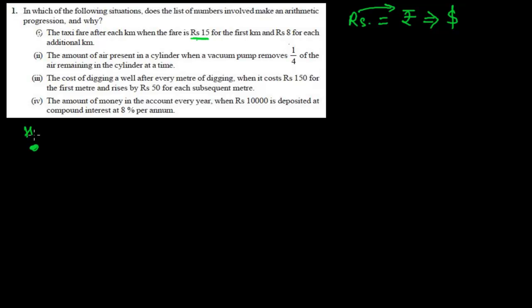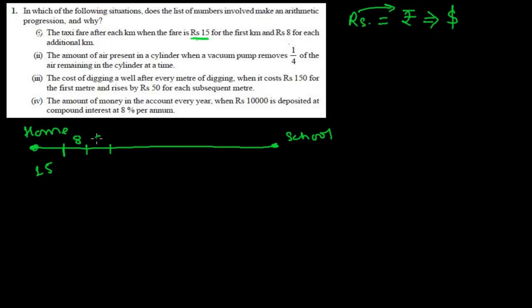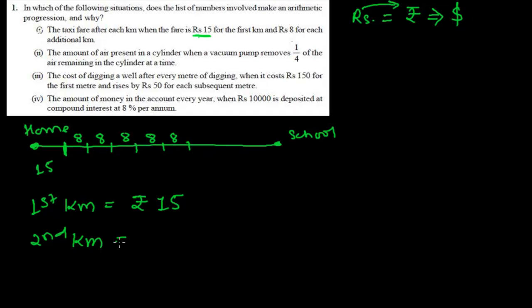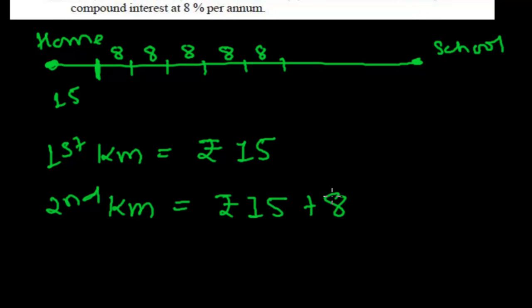Suppose this is your home and you're going to school, taking a taxi. For the first kilometer you are paying 15 rupees. For the second kilometer you are paying 15 plus 8 rupees. So up to first kilometer you have paid 15 rupees; up to second kilometer you have paid 15 plus 8, that is rupees 23.